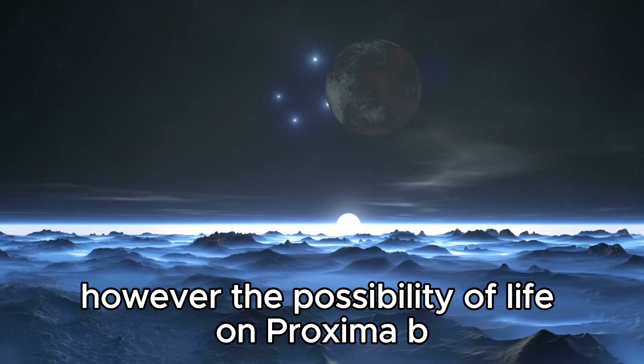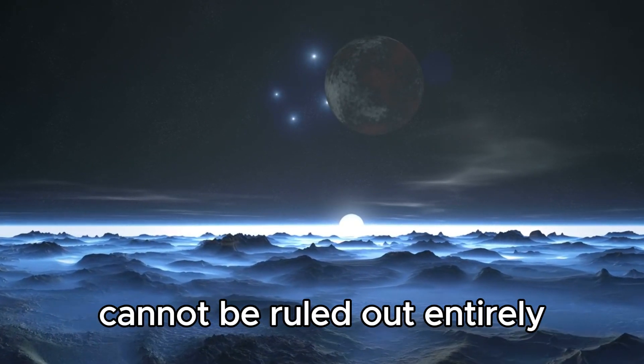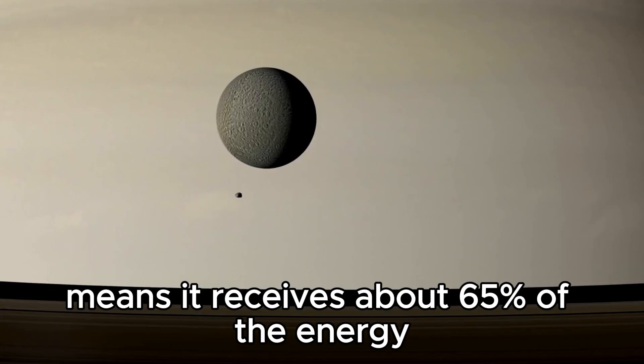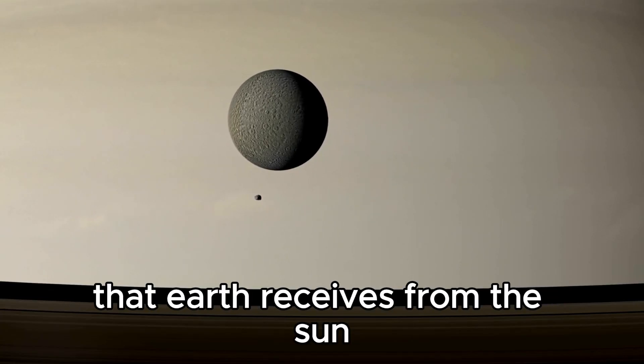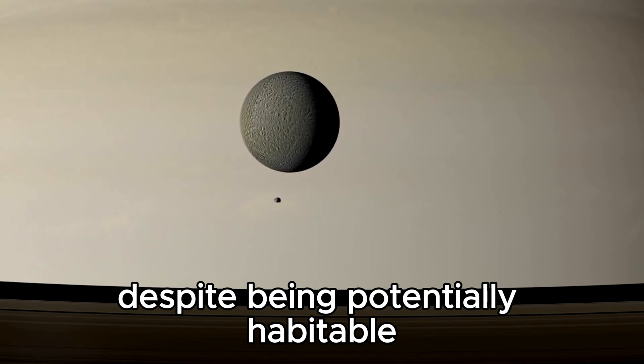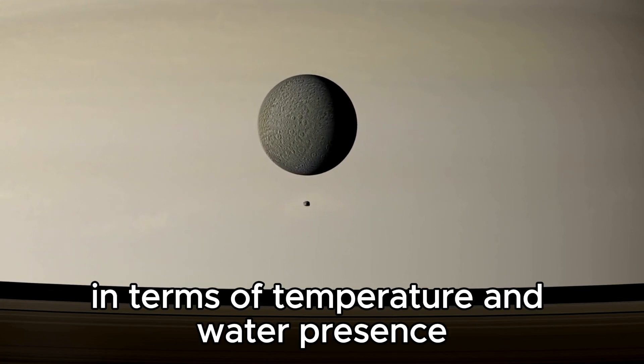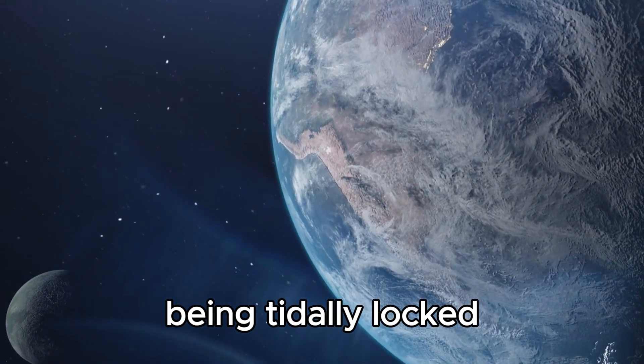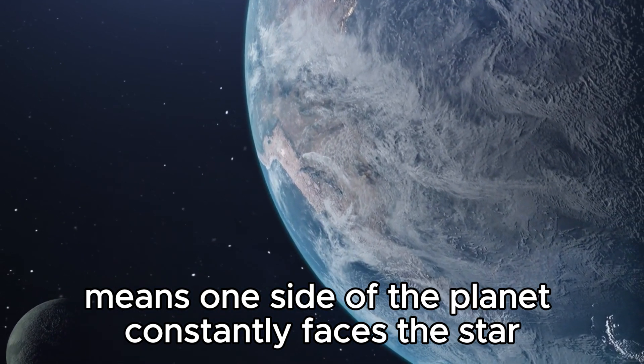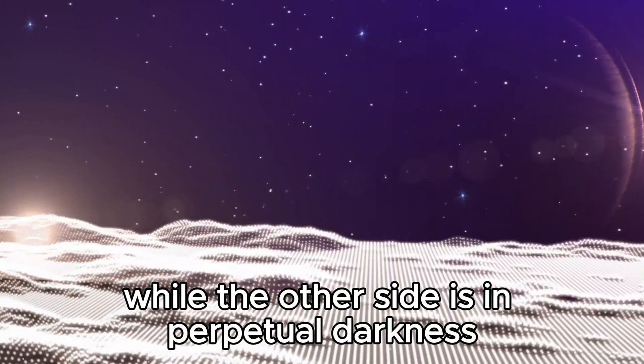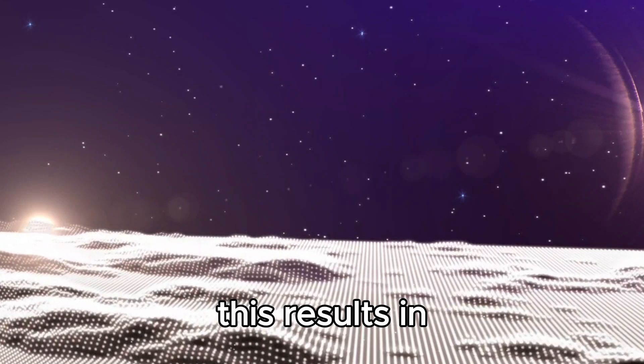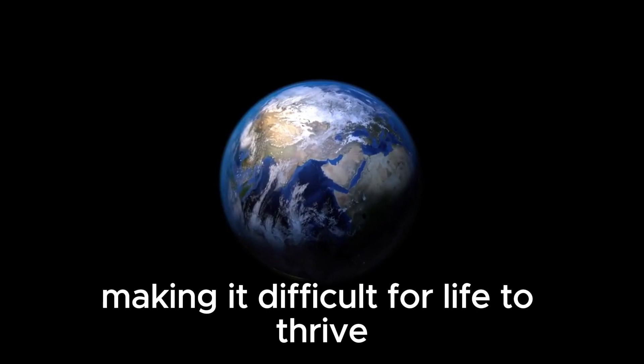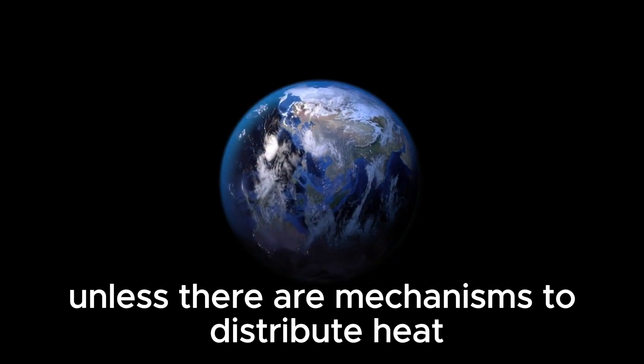However, the possibility of life on Proxima B cannot be ruled out entirely. Its proximity to its star means it receives about 65% of the energy that Earth receives from the Sun. Despite being potentially habitable in terms of temperature and water presence, Proxima B presents several challenges. Being tidally locked means one side of the planet constantly faces the star, while the other side is in perpetual darkness. This results in extreme temperature differences between the two sides, making it difficult for life to thrive unless there are mechanisms to distribute heat.